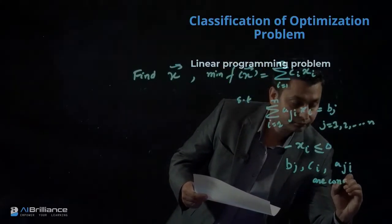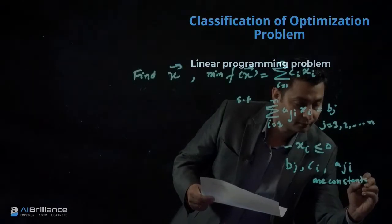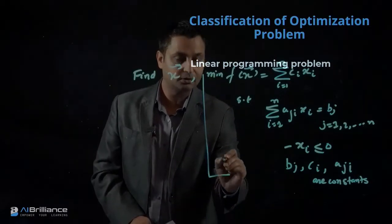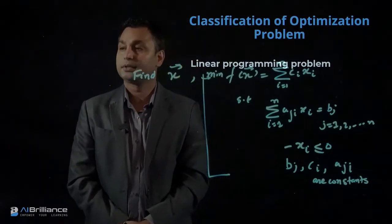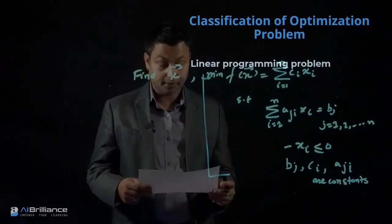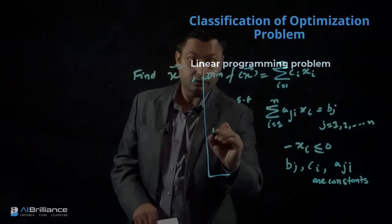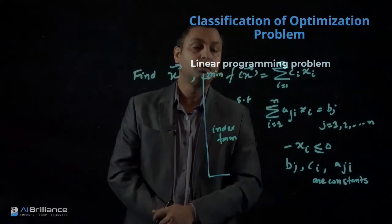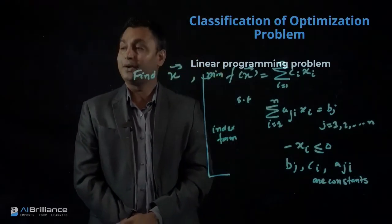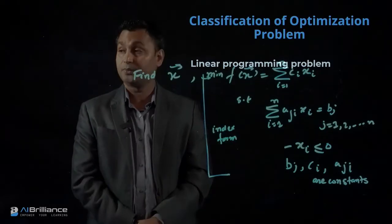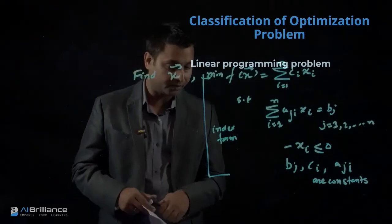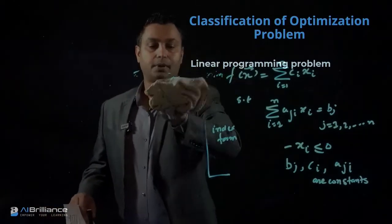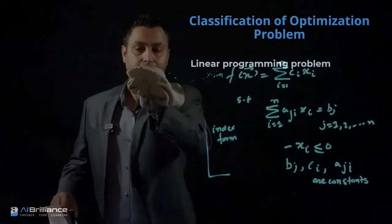If you write a problem formulated in this nature, it will essentially be a linear programming problem. This is the index format of writing linear programming — the index form. Now, as I mentioned, you can write the same linear programming problem in a vectorized form, so let's go ahead and write that too. I will erase this — this was the index form — but there is a vectorized way of writing it as well.